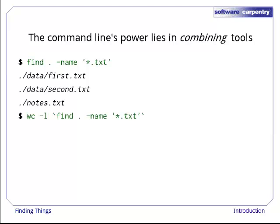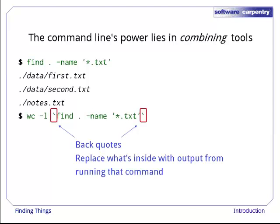Here's how to combine that with wc -l to count the lines in all those files. The trick here is to put the find command inside back quotes. This tells the shell to run find and then replace what's in the back quotes with the command's output. This is exactly what the shell does when it expands star, question mark,